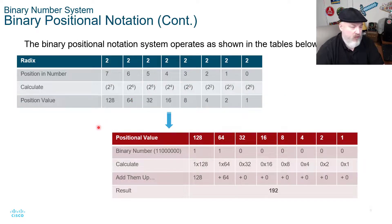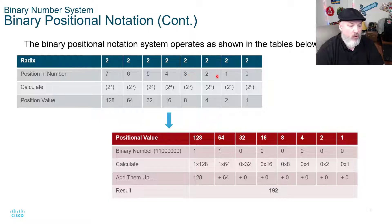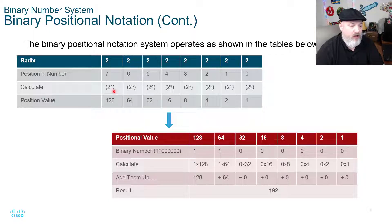On the binary positional notation, it works just the same way except our places increase by two, because instead of going up by 10, we go up by two's place: one, two, four, eight, 16, 32, 64, 128. So each time it doubles. That's the easiest way to memorize it. You can also calculate to the place value: two to the seventh place is 128, two to the second place is four, two times two times two is eight, two times two times two times two is 16.